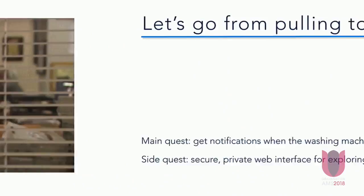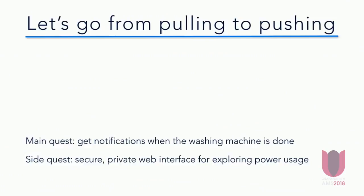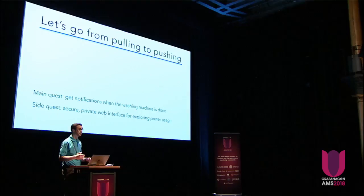So I thought about how I can solve this. I thought about putting a camera in there, buying a new washing machine that has an API, but I'm also cheap, so I wanted to do it with stuff I had lying around already. So I thought: let's get some monitoring on my power usage and determine if I can see from the graphs whether my washing machine is done.